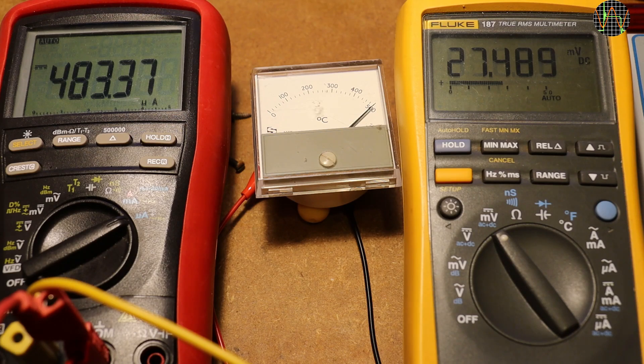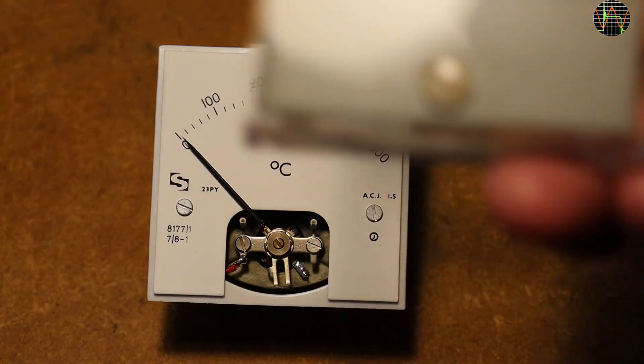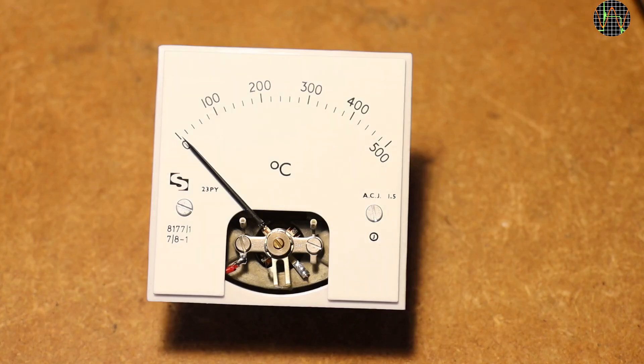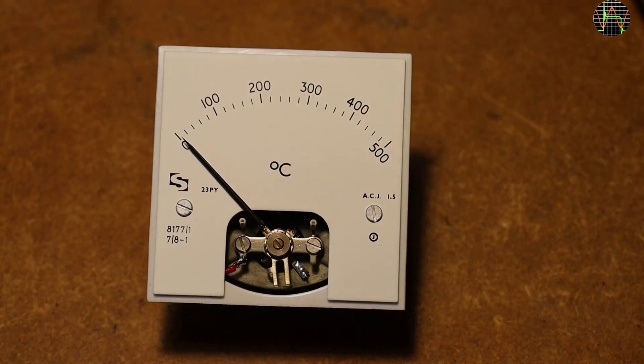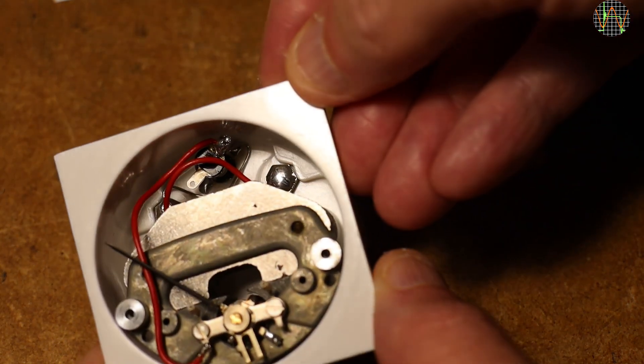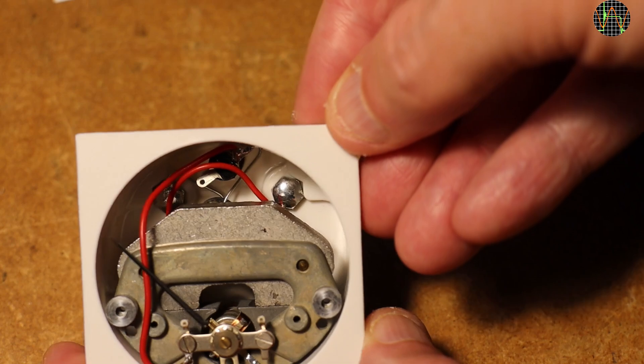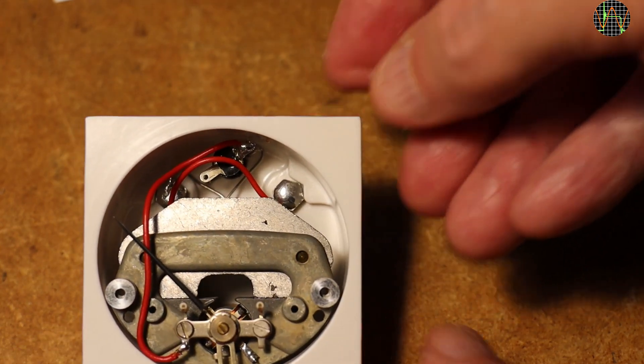But I really would like to know where the promised automatic cold junction compensation is hiding that was promised in the blurb on the back and if there is something causing occasional shorts that would explain the excessive current shown earlier. The only place for all this is inside the instrument itself. With the spudger the cover came up relatively easy and removing the scale uncovers there is something unusual hiding in there.